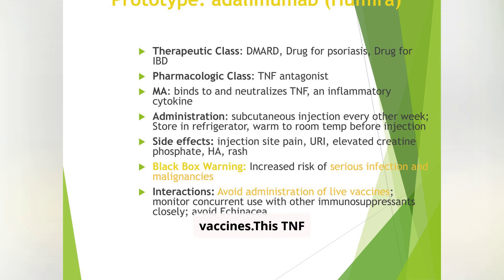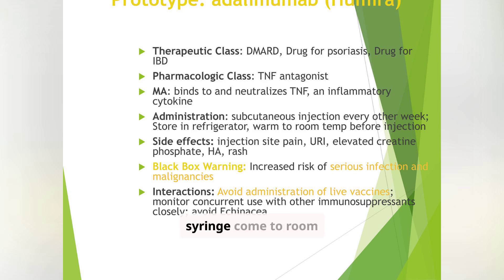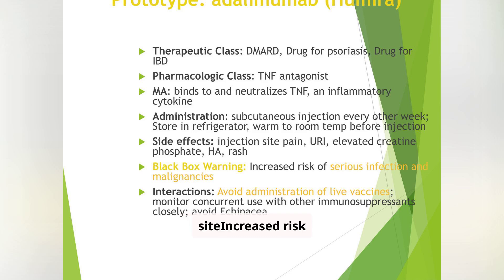This TNF blocker is used for RA, Crohn's disease, and psoriasis. It's given subcutaneously every other week. Teach patients to let the syringe come to room temperature before injecting and to rotate sites. Watch for redness or itching at the injection site, increased risk of TB or fungal infections, and rare risk of lymphoma.